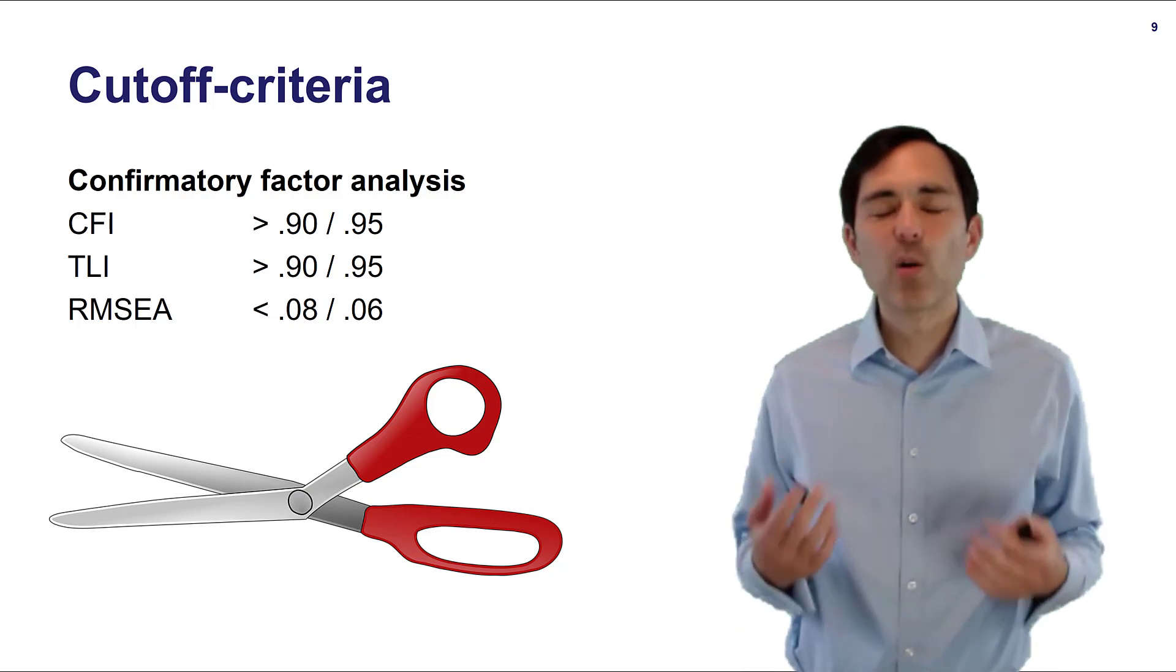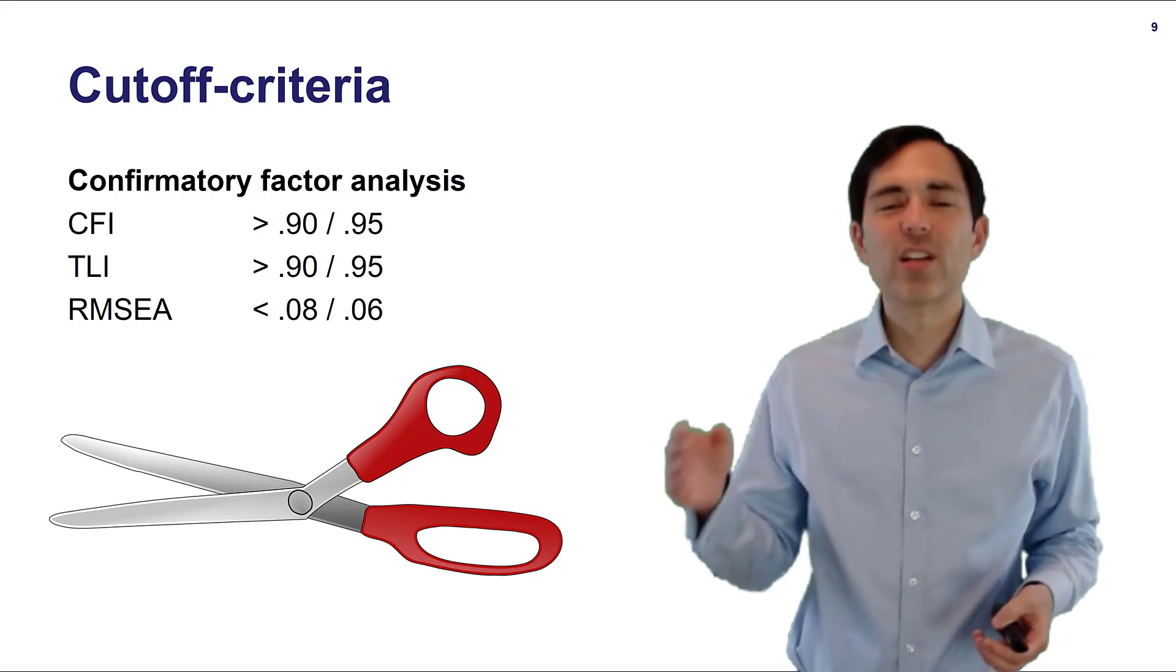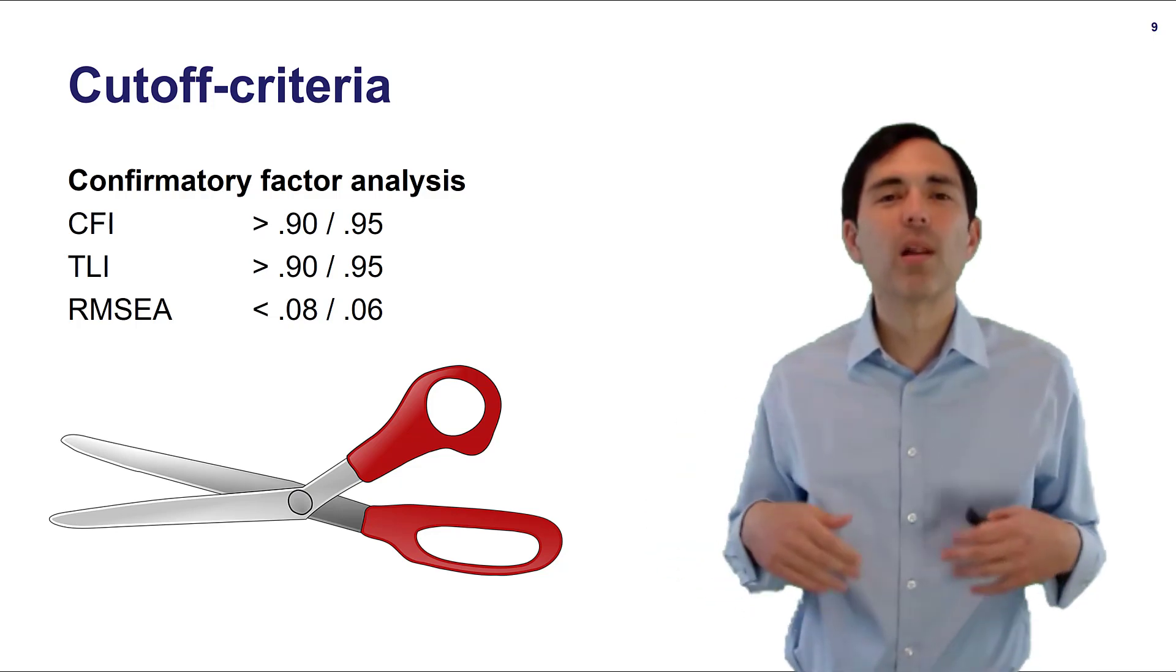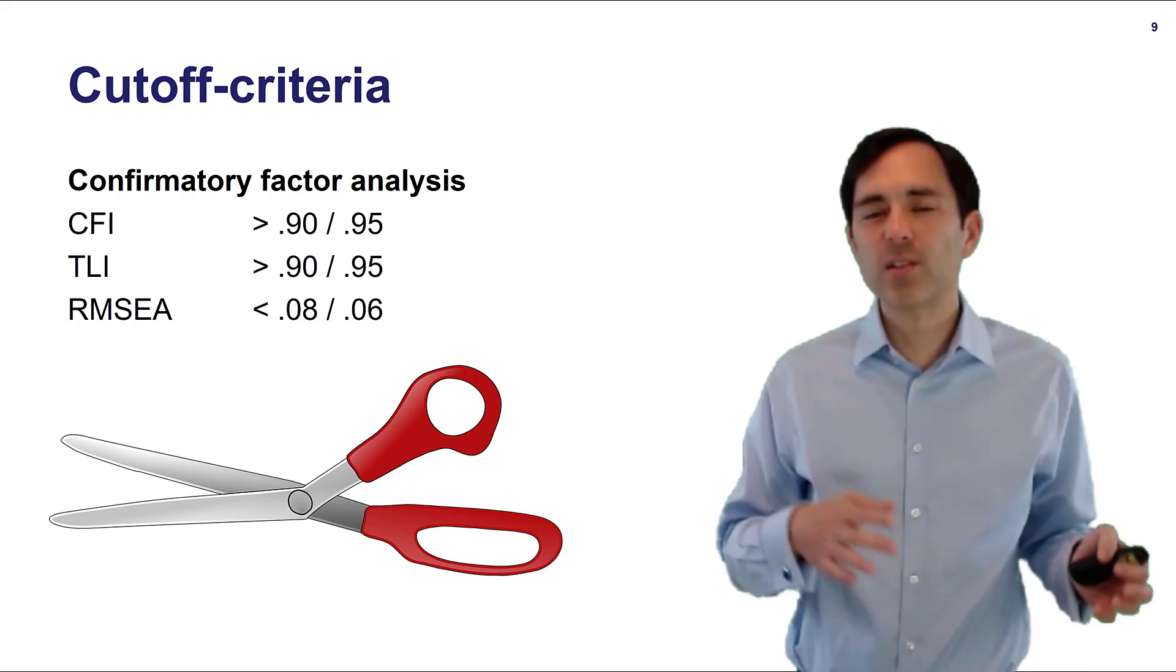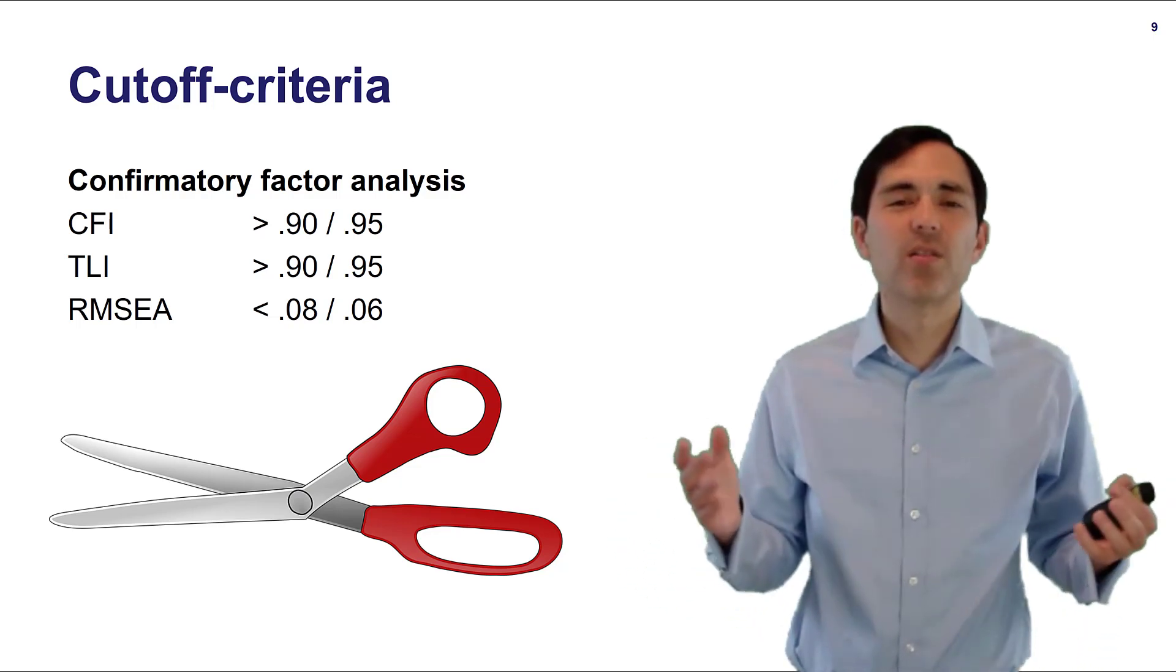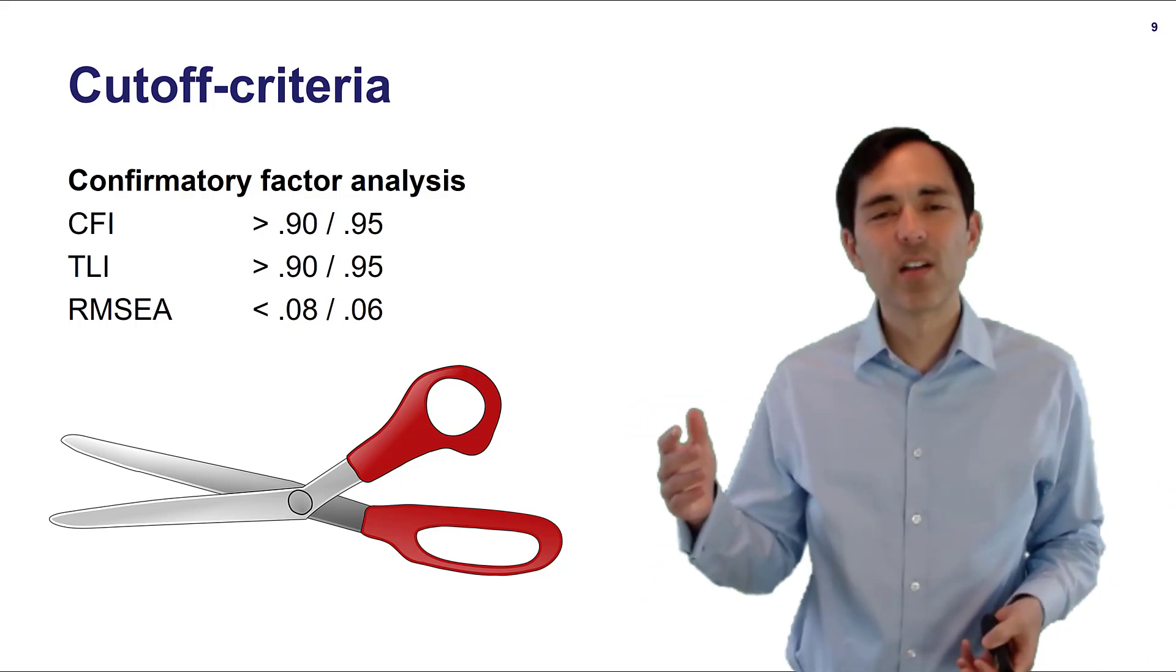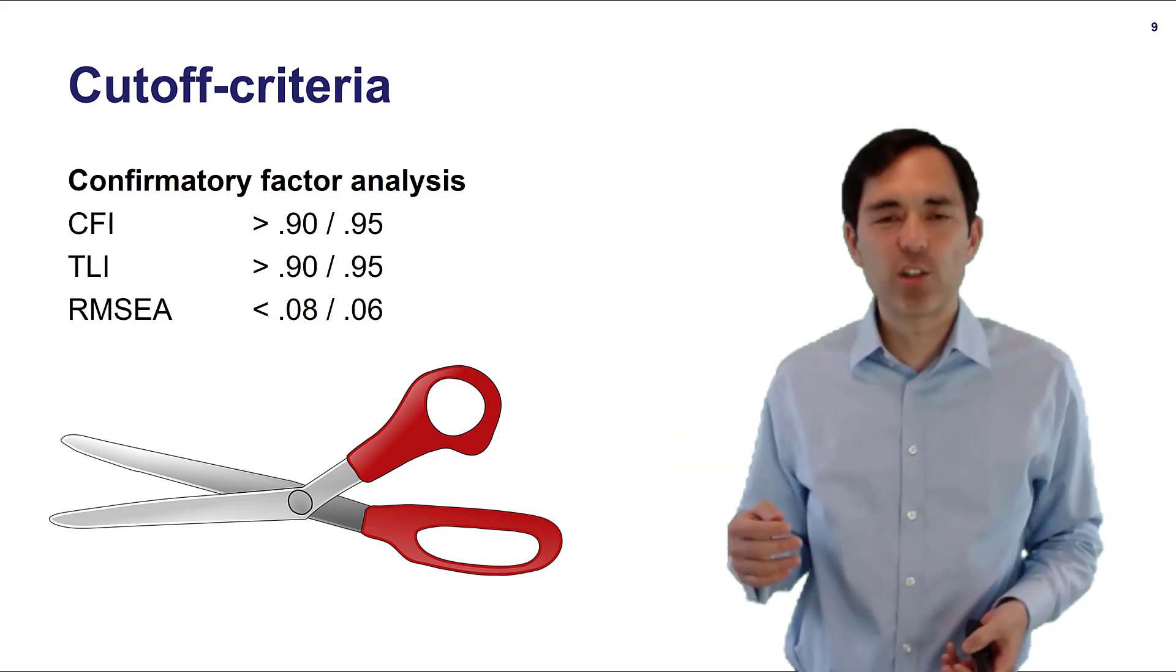If you're developing a scale I would usually recommend to apply more stricter rules here because if you would like to apply your scale elsewhere you have a different sample and so forth it's not perfectly fitted to the sample then maybe also the model fit and all these indicators would be lower. So it would be safer to be more critical here at this development stage.